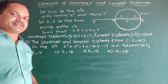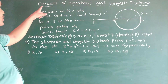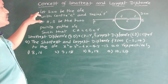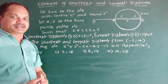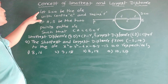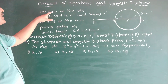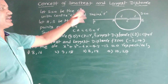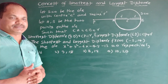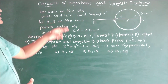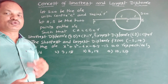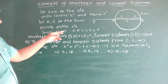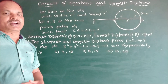Dear students, observe the concept of shortest and longest distance from a point to a circle. Let us consider S equal to 0 as a circle with center C and radius R. Let capital A and B be two points on the circle.